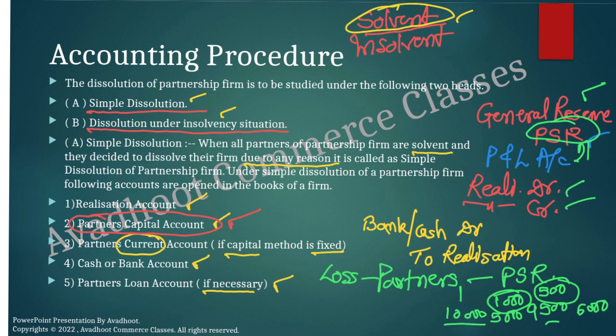Then make the payment of outside liabilities. If a liability is not mentioned in the problem, it is silent — it is assumed paid at book value. Afterwards, close the realization account and transfer the loss or profit. Generally there is a loss; it should be transferred to the partner's capital account debit side.